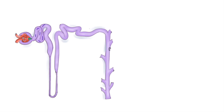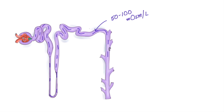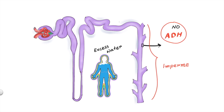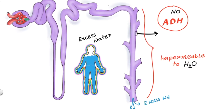By the time luminal fluid reaches the distal part of the nephron — precisely the late part of distal convoluted tubule and collecting duct area — it is highly diluted, with osmolarity around 50 to 100 milliosmol per liter. The water permeability of the last part of the nephron is ADH dependent. If ADH is not there, it will remain water impermeable, meaning no water can be reabsorbed back to the general circulation, so it will pass out as urine.